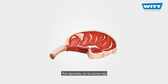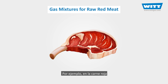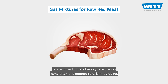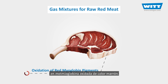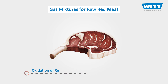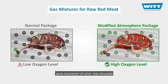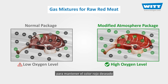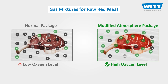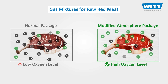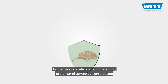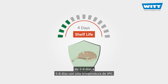For example, mechanisms that limit the shelf life of raw red meats are microbial growth and oxidation of the red myoglobin pigment, converting it to oxidized brown metmyoglobin. For this reason, high concentrations of oxygen are necessary in order to maintain the desirable red colour for a longer period of time. With the right mixtures, the practical shelf life of consumer-packed meat can be extended from 2 to 4 days to 5 to 8 days at 4 degrees Celsius.